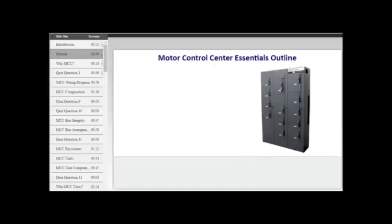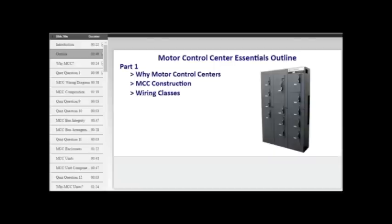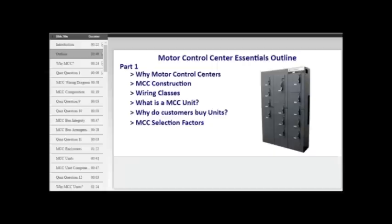Here is an outline of what we will be covering in this module. It will consist of three parts. In part one, we will answer the question: why do customers buy Motor Control Centers? We will talk about how a Motor Control Center is constructed, discuss wiring classes, define the aspects of a Motor Control Center unit, and conclude with the identification of the selection factors for a Motor Control Center, feeder unit, or starter unit.